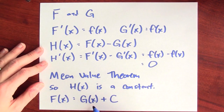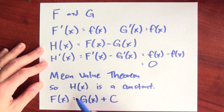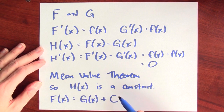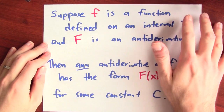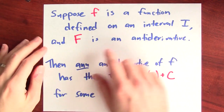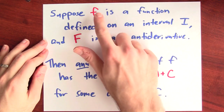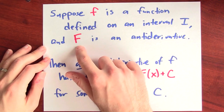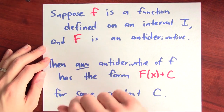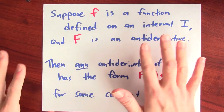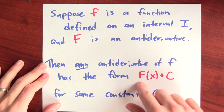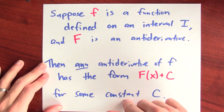Said differently: if you've got a specific antiderivative, then any other antiderivative is just that specific antiderivative plus some constant. Suppose little f is a function defined on an interval I — it's crucial that it's defined on an interval — and suppose big F is an antiderivative of little f, meaning differentiating big F gives little f. Then any antiderivative of little f has the form F(x) + c for some constant c.